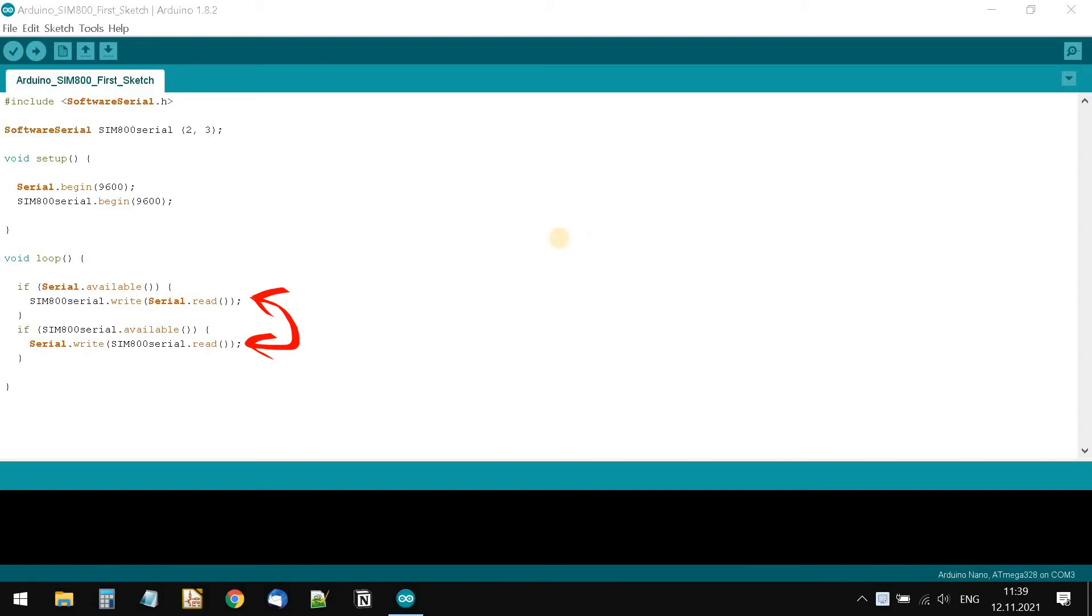If the Arduino Nano controller receives data from the port monitor, then it immediately sends a copy of it to the UART program port. And also, if the data came from SIM800, it immediately sends a copy of it to the physical UART and we will see it on the port monitor of the Arduino IDE program.